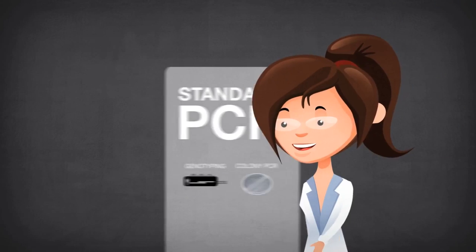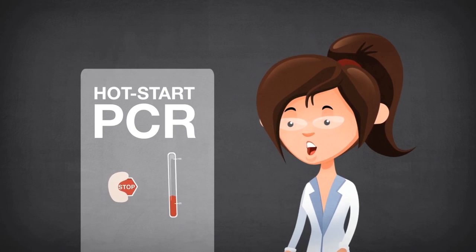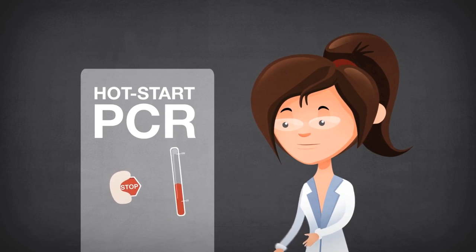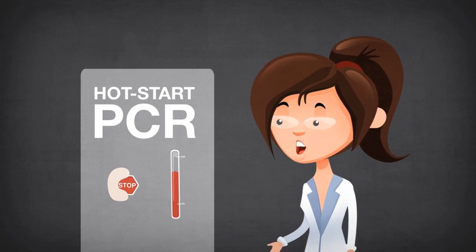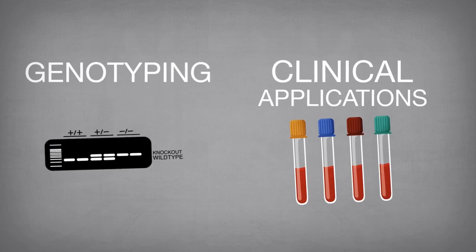DNA polymerases may also have what are called hot start modifications. Hot start DNA polymerases enable room temperature reaction setup and are often preferred for PCR applications that require specific detection, such as genotyping or clinical applications.